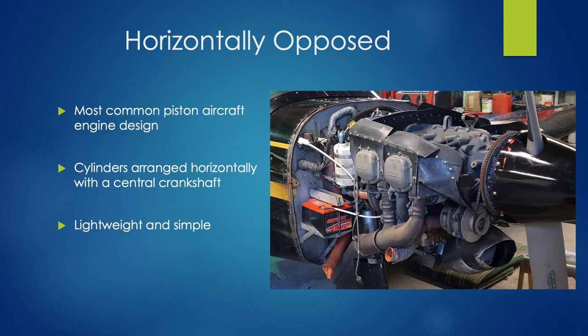More commonly, what will be used is a horizontally opposed engine, meaning the cylinders move in a horizontal direction. Normally a four-cylinder, or possibly a six-cylinder on the aircraft. This is the most common type of engine — it's very lightweight and simple, which is what is best for aviation to save weight and to make it easy to maintain.